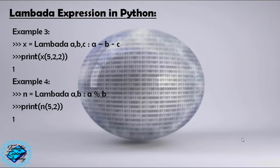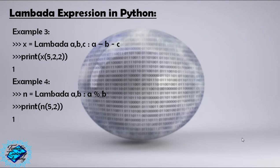Lambda expression in Python, example number four: X equals Lambda a, b, c: a modulo b. print(X(5, 2)) — we will get one.